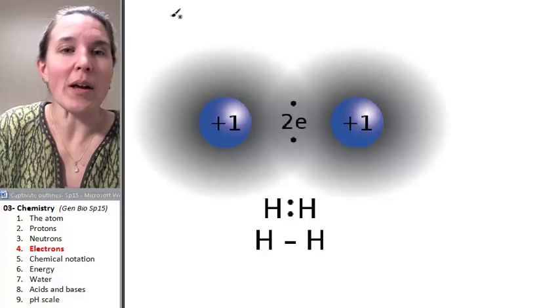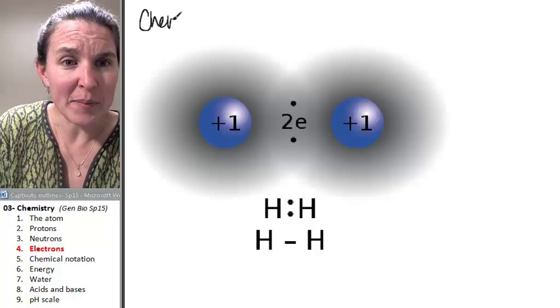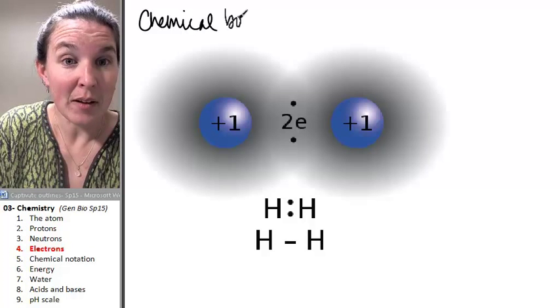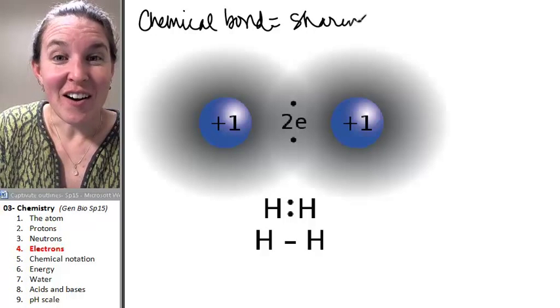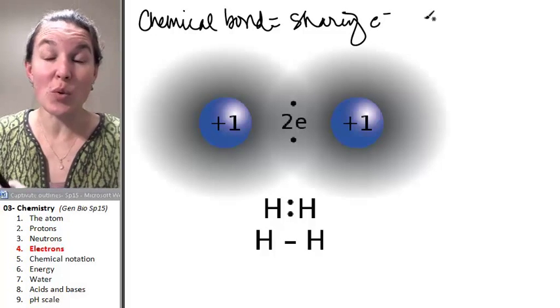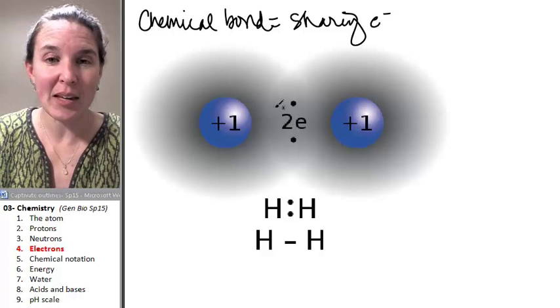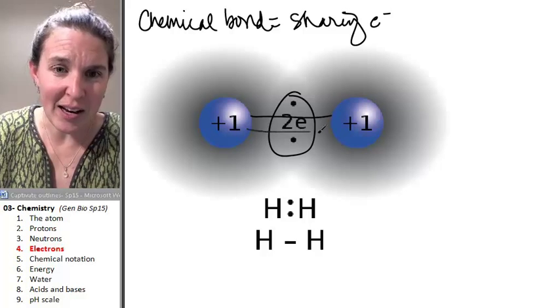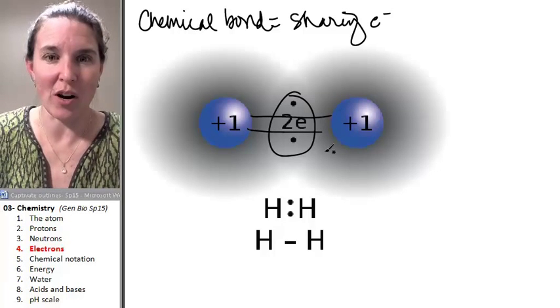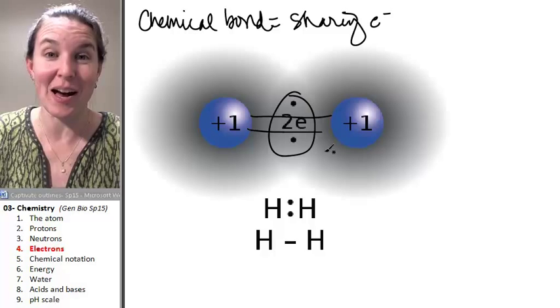So, okay, let's write this down. This is a chemical bond. We're sharing electrons between two atoms. Here is my chemical bond. This is the chemical bond. I could draw it like that. That's usually how I will draw it, like a line connecting two atoms.